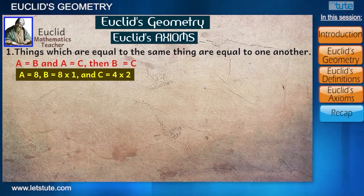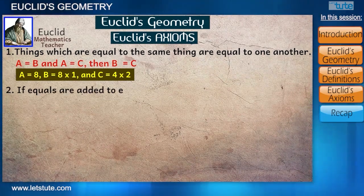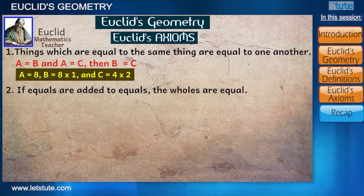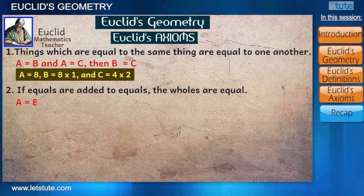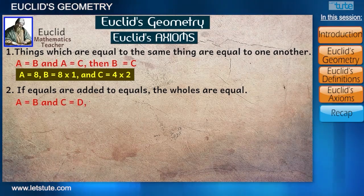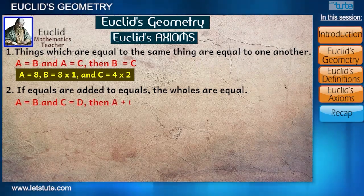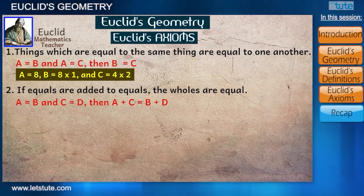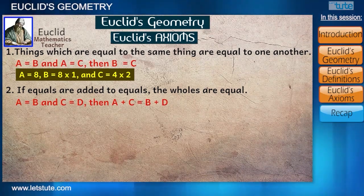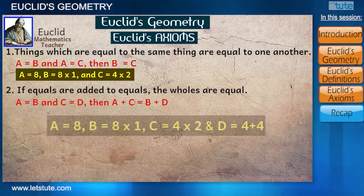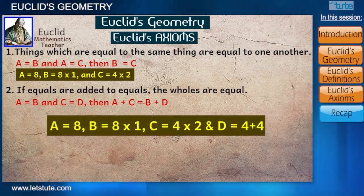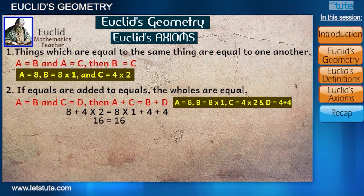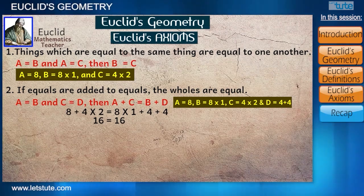The second axiom: if equals are added to equals, the wholes are equal. That is, if a equals b and c equals d, then a plus c will equal b plus d. Assigning values — for example, 4 plus 4 — and substituting all values, we can see that a plus c equals b plus d.